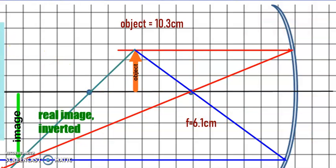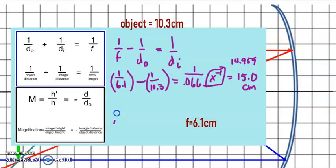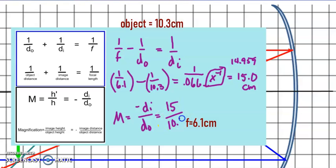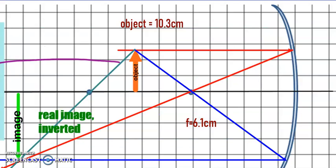The magnification for this case: m equals negative di over do, so that's negative 15 over 10.3, giving us negative 1.5. That means our image is 1.5 times bigger than our original object, and it is real and inverted because it's negative — 1.5 times the size, negative magnification, real and inverted image.